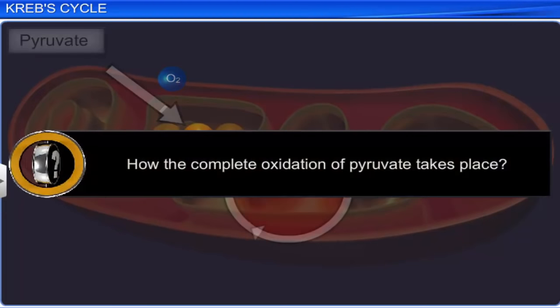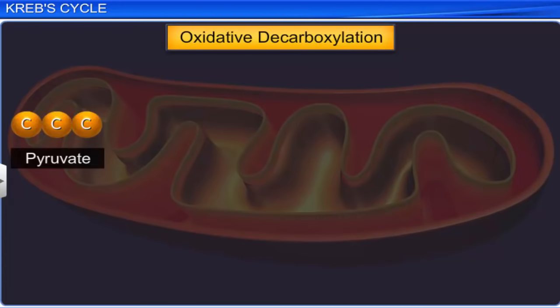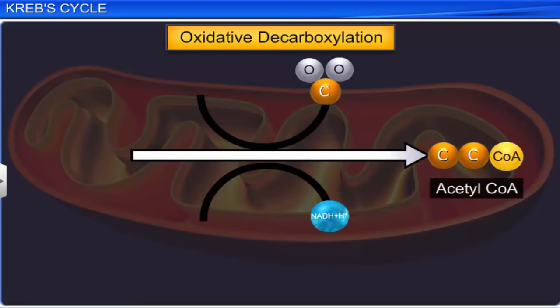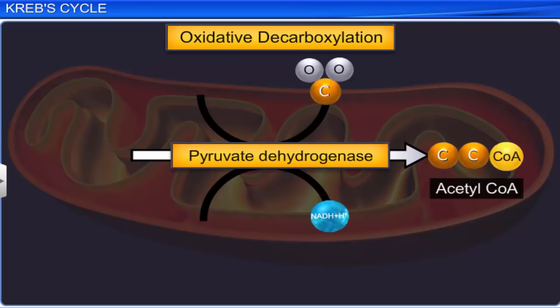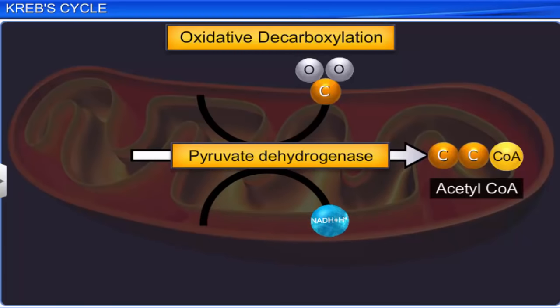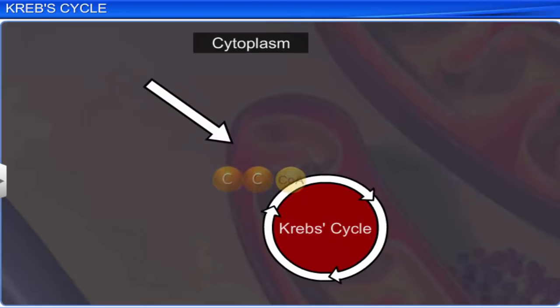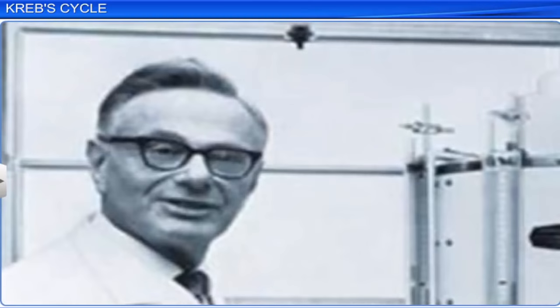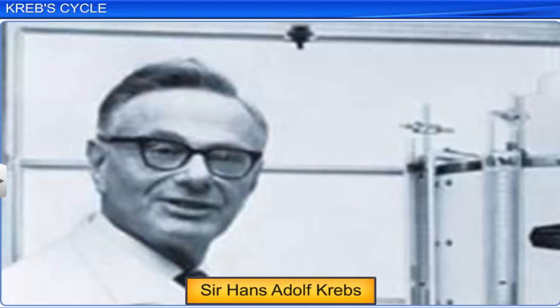Inside the mitochondria, the pyruvate undergoes oxidative decarboxylation in the presence of the pyruvate dehydrogenase enzyme, NAD+, and coenzyme A. The NAD+ is reduced to NADH+ H+, and coenzyme A combines with the acetyl group of pyruvate to form acetyl CoA. The acetyl coenzyme A thus formed enters Krebs cycle, which has been named after the scientist Sir Hans Adolf Krebs.